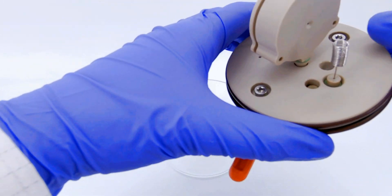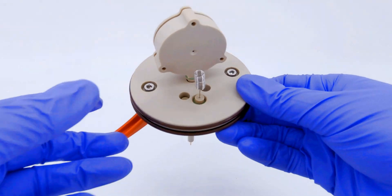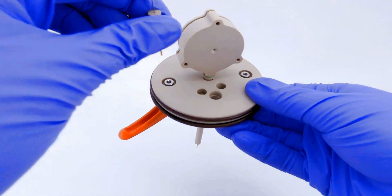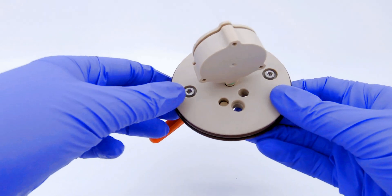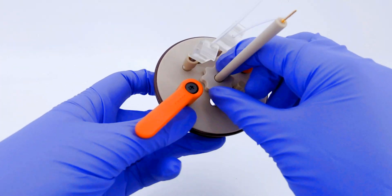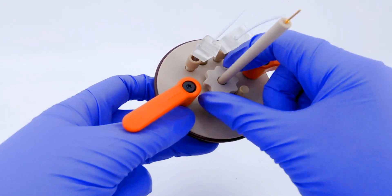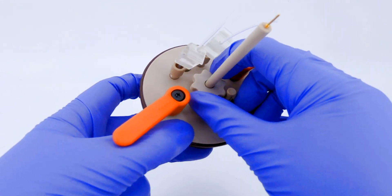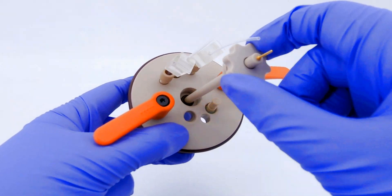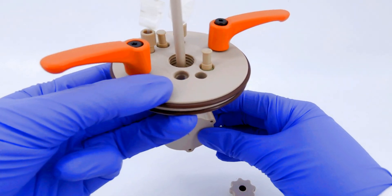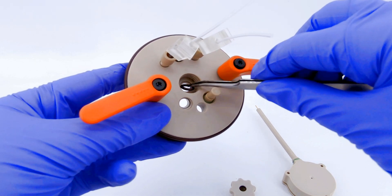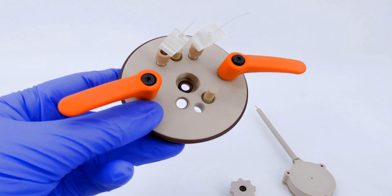Gently lift the cell lid and remove the counter electrode by pushing from underneath. The working electrode can be removed by reversing the assembly process. Make sure to replace the o-ring underneath the electrode holder.